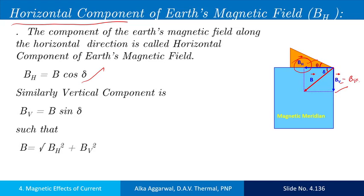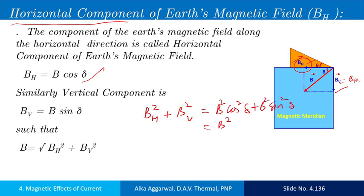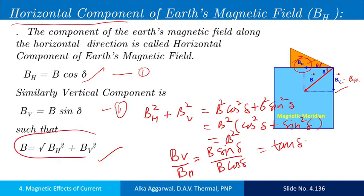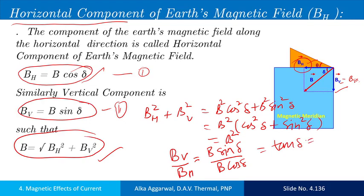If we square and add these two quantities: BH² + BV² equals B² cos²δ + B² sin²δ, which equals B². Therefore B equals the square root of BH² + BV². Dividing BV by BH gives B sin delta over B cos delta, which equals tan delta. With the help of these four equations, all types of numericals on this topic can be solved.